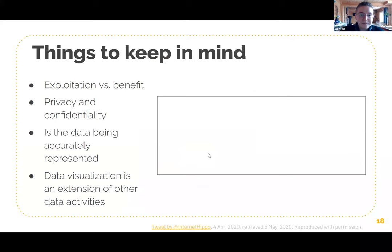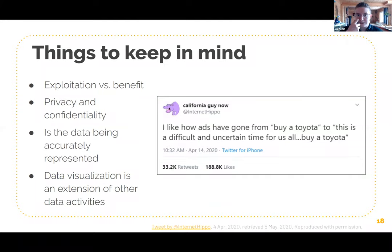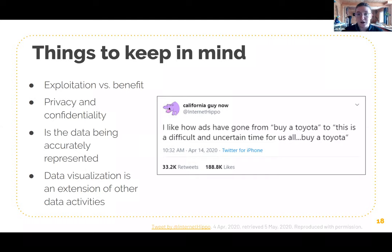This is also where ethics come in. In addition to the risk associated with evoking strong emotions — like gun deaths, which is very tragic for many people — it's important to keep in mind the message you're trying to show. This might not come up as much when doing typical library data visualizations about how many books we have, how many ebooks circulated, or how many people used our space, but our data also represents people, so it's a good thing to keep in mind when working with data generally.